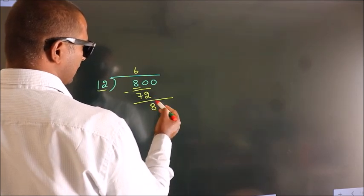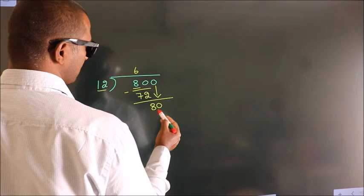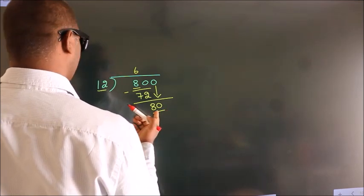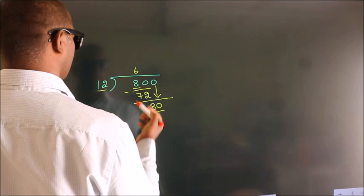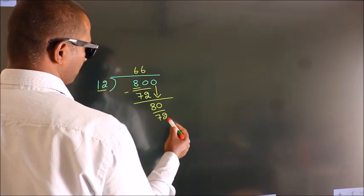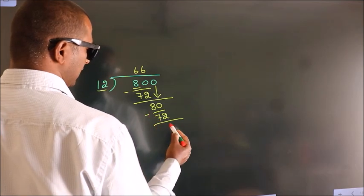After this, bring down the beside number. So 0 down. So 80. A number close to 80 in 12 table is 12, 6, 72. Now we subtract. We get 8.